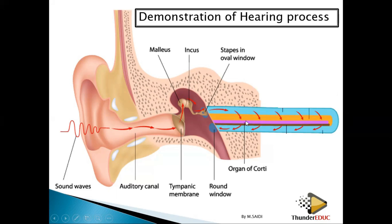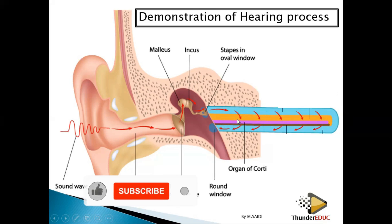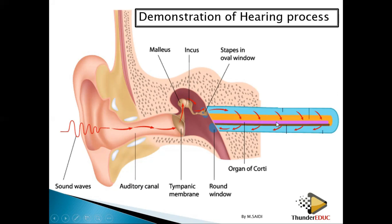Inside the endolymph you have a membrane that has sensory cells. Those sensory cells are being stimulated. Some pressure goes through this membrane and then it is being absorbed by the round window. That is why we say the round window absorbs the excess pressure from the inner ear.